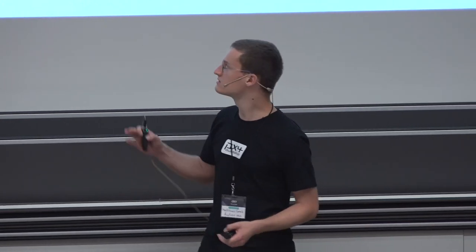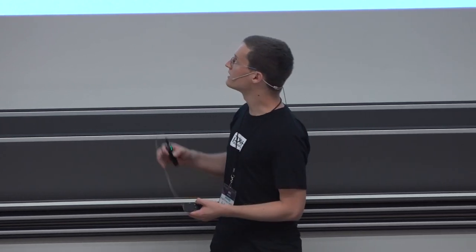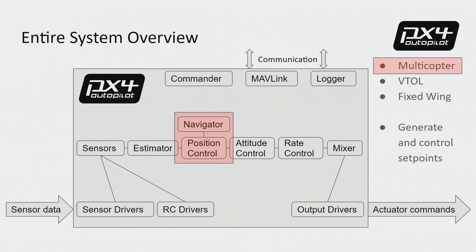We will focus on the multicopter control pipeline because that's where the flight task architecture was introduced. At the beginning we have a sensors module and an estimator. Then we have a control pipeline for the different states — for multicopter that is position, attitude, and rate. That's where you put in your set point to make your vehicle act in a certain way in a given mode. On top we have housekeeping modules like the commander, and MAVLink and logger for communication and log analysis.